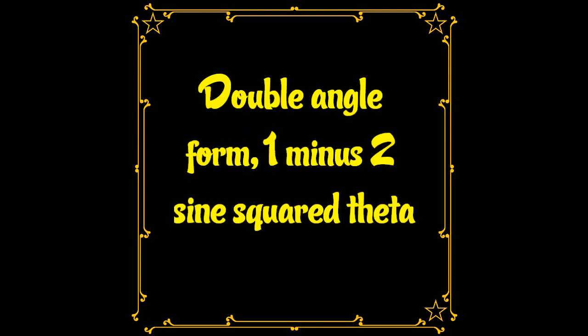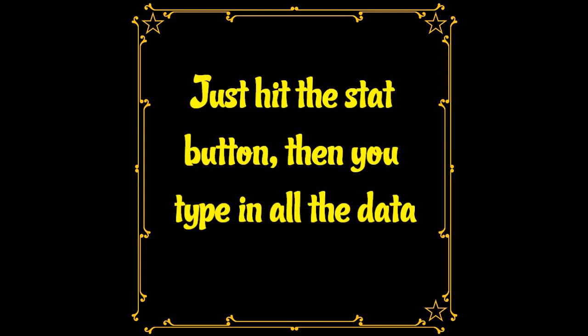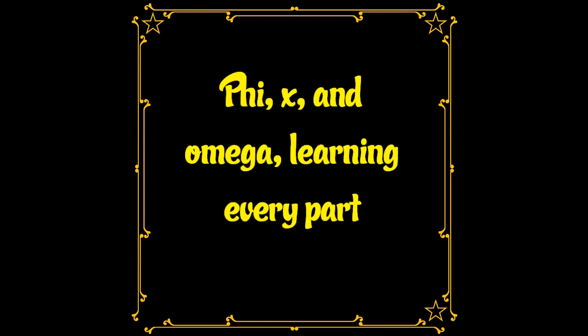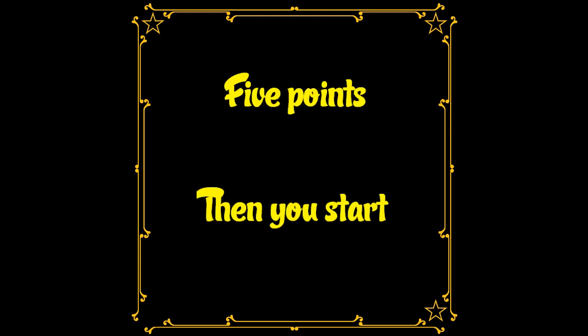Double angle form — one minus two sine squared theta. Just hit the stat button, then you type in all the data. Phi, x, and omega — learning every part. Five points, then you start.